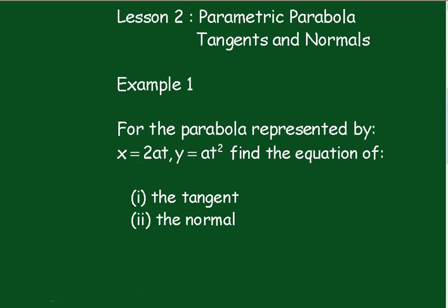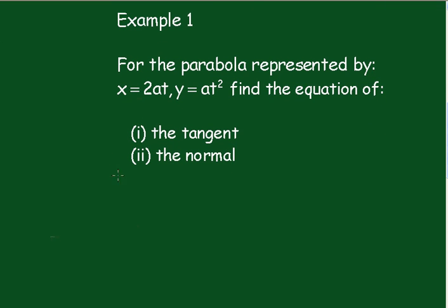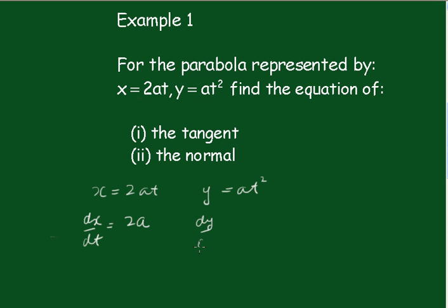We'll set up the parametric equations: x equals 2at and y equals at squared. Now I'm going to differentiate with respect to the variable t. Remember, a is a constant. So we get dx/dt equals 2a and dy/dt equals 2at.